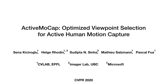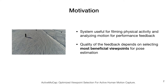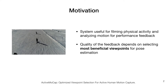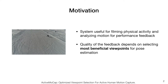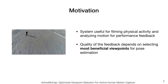Hello, I'm Sena Kucurolu and I would like to present our work Active Mocap: Optimized Viewpoint Selection for Active Human Motion Capture. The accuracy of monocular 3D human pose estimation highly depends on the viewpoint from which we capture the image. This paper addresses the problem of positioning a moving camera, such as a drone, at the location which will give the highest accuracy for pose estimation. An active motion capture system, such as one based on a personal drone, would allow one to film themselves performing a physical activity and analyze their motion, for example, to get feedback on their performance.